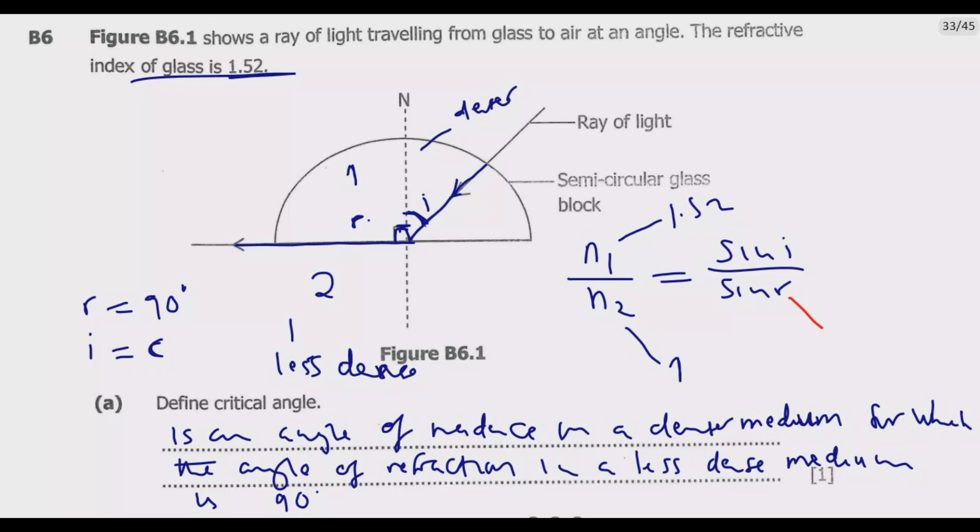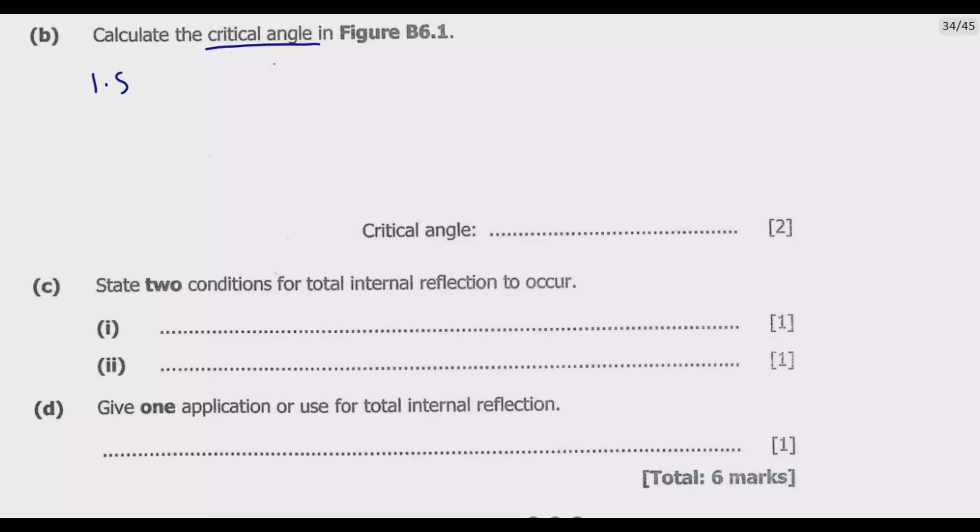We know that R is equal to 90 degrees. We are looking for I, which is the critical angle. Let us substitute into Snell's law of refraction. What we have now is 1.52 over 1 equals sine C over sine 90 degrees. Sine 90 degrees using your calculator equals 1. So this tells me that 1.52 equals sine C.